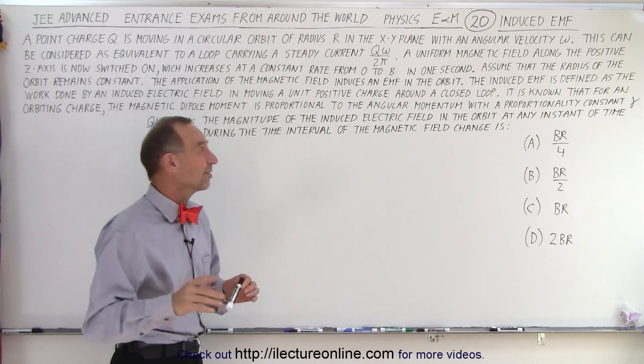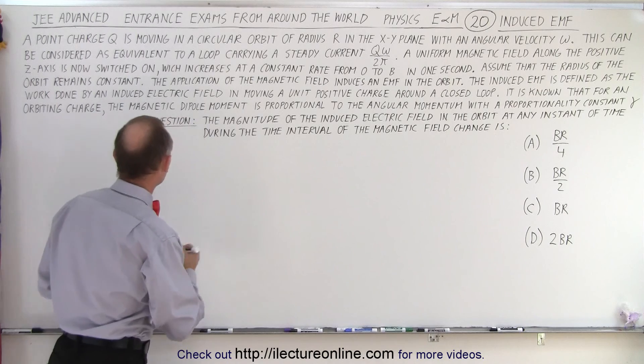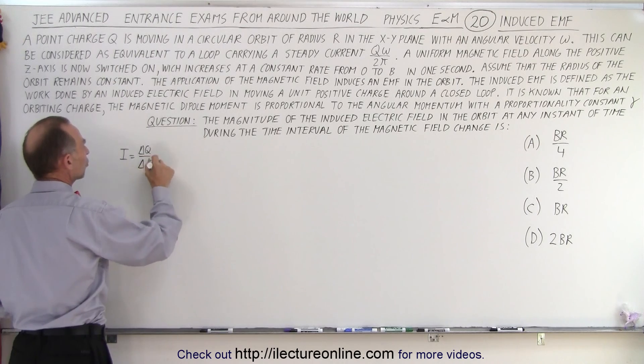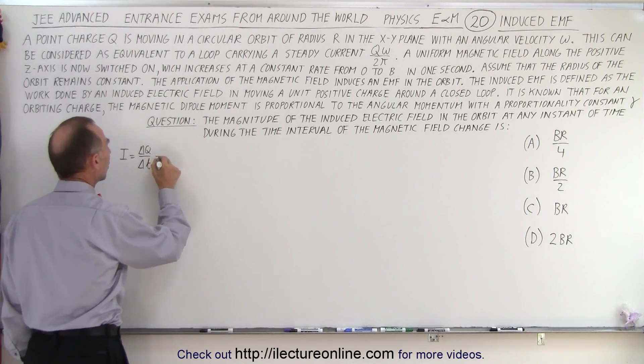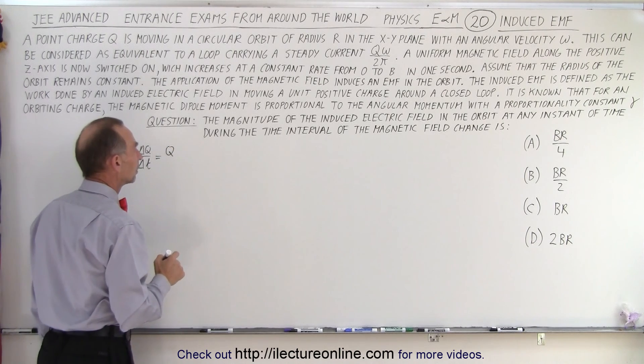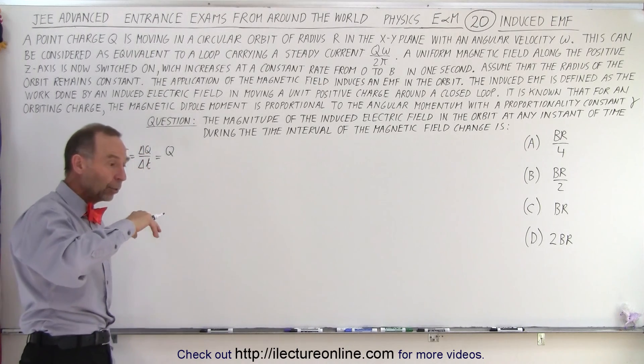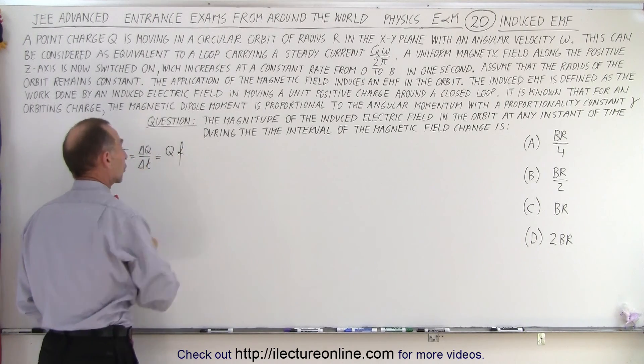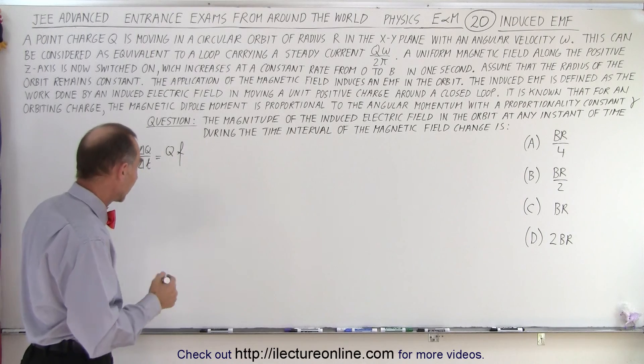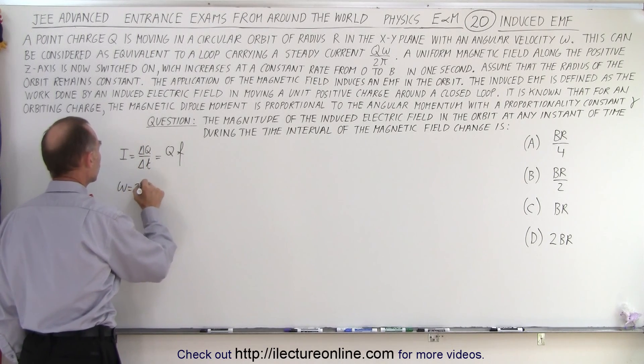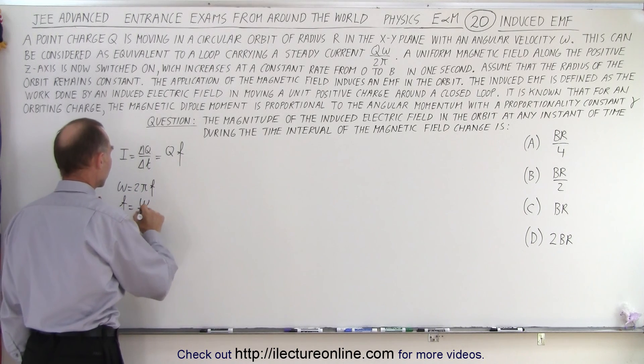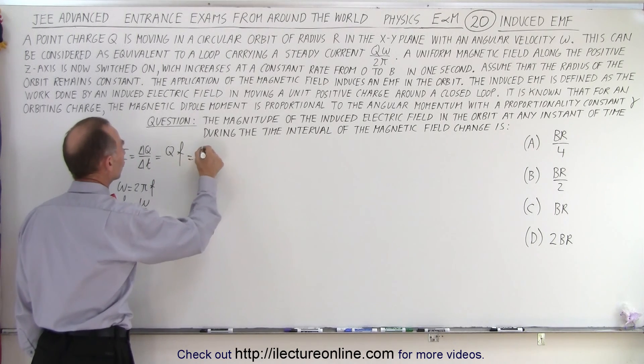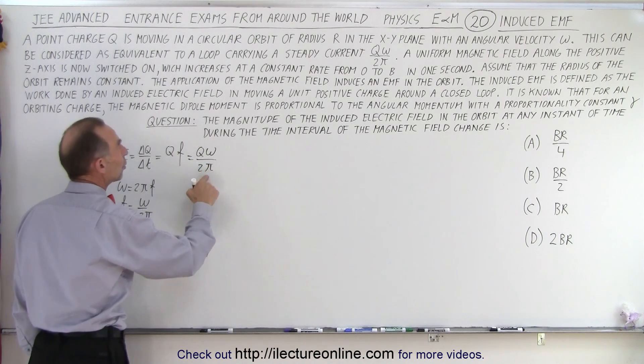So first of all, and this is not really necessary, I want to explore this one a little bit. Notice that the current I is equal to the change in charge per unit time. It's how much charge flows by in any given time. So in this case we have Q, that's the charge going around the circle, and then we want to figure out how many times per second it goes around. Well that happens to be the frequency. So QF represents the current in a circular motion and of course we have a relationship that Omega is equal to 2πF or F is equal to Omega divided by 2π, and notice that does indeed represent the current.